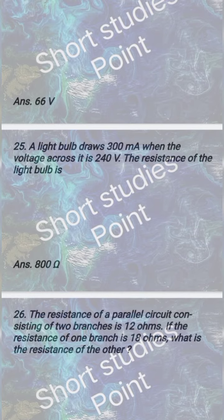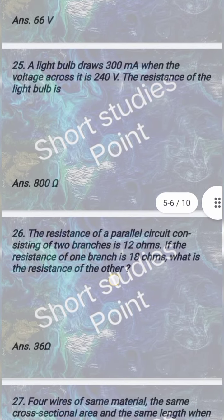A light bulb draws 300 mA when the voltage across it is 240 volts. The resistance of the light bulb is 800 ohm.